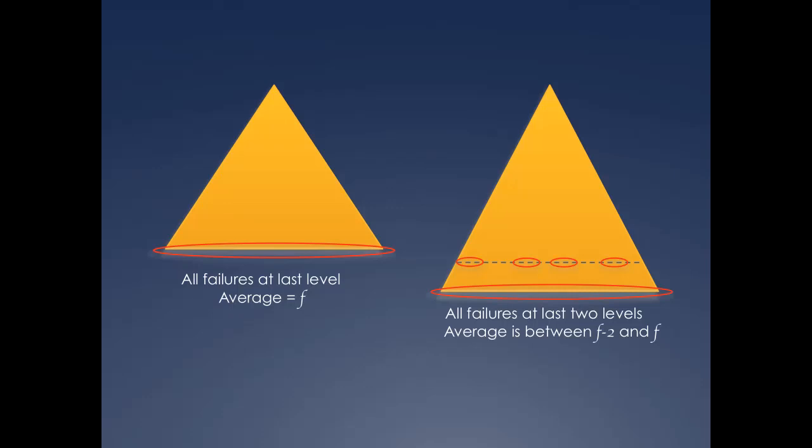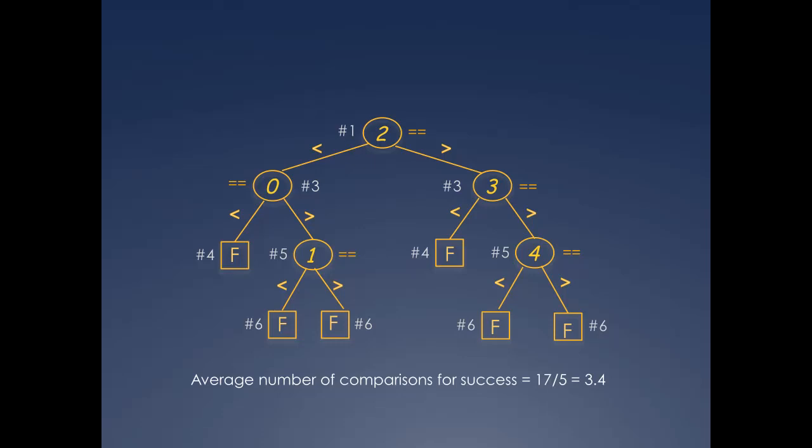There is one assumption we have been making all along, and that is all searches are equally likely. Let's take up the example of the length 5 array again. There are 5 success spots, and if you assume that each of them is equally likely, then each spot carries a 1 in 5 chance of occurrence.